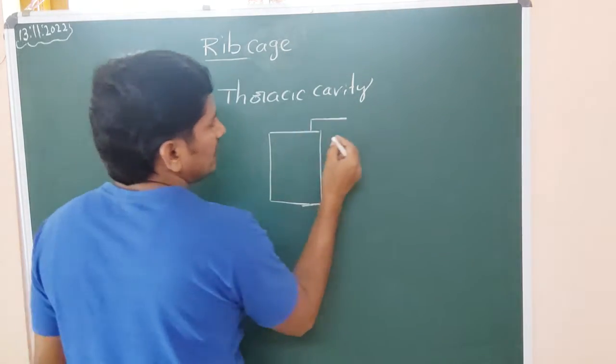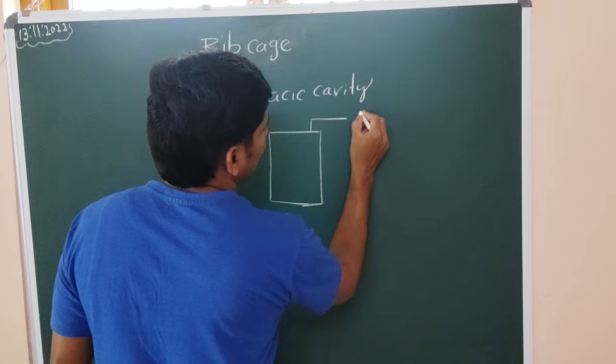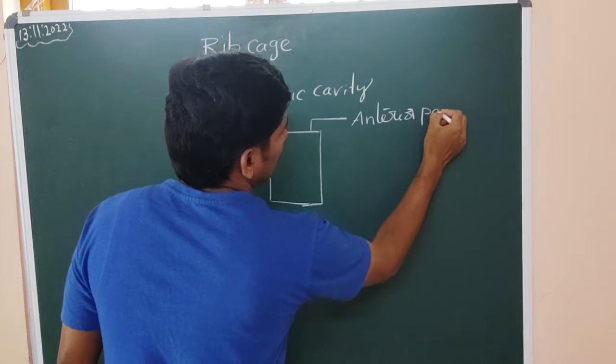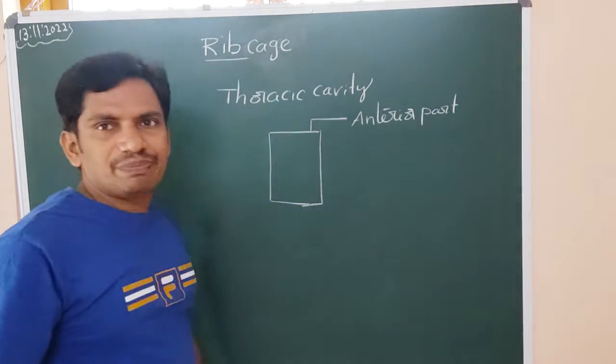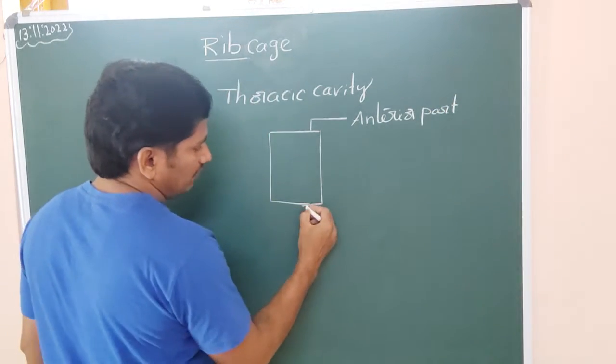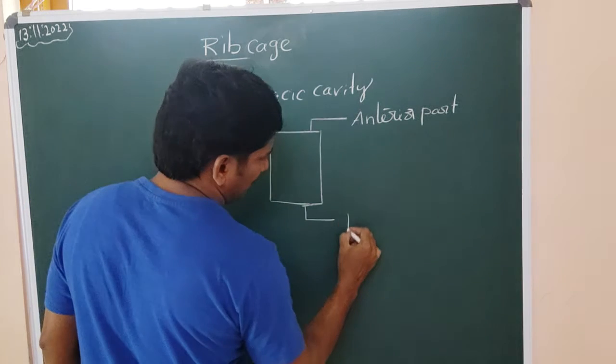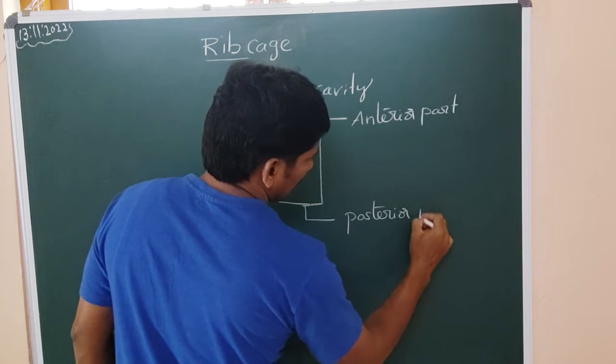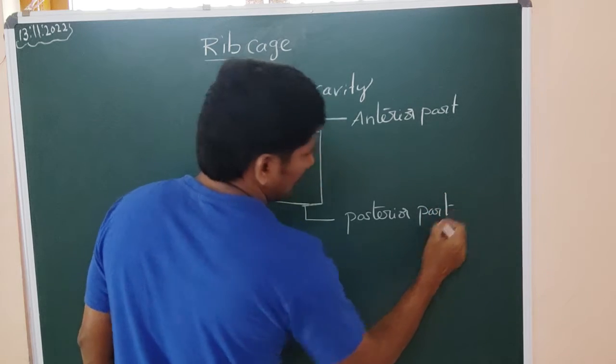This is, we can say, is the anterior part. Anterior part of ribcage. In the posterior side also there, this is the posterior part, or the posterior side.